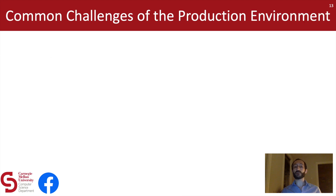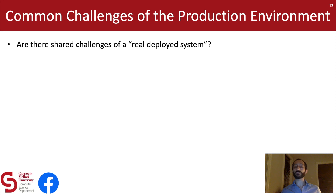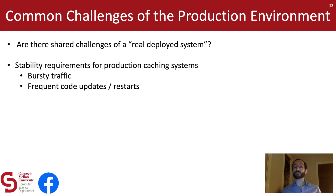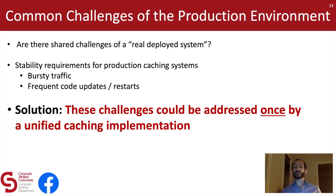The final category of challenges is really a set of challenges related to being a real deployed system in a production environment, and most of these challenges are related to cache stability. For example, caches need to be able to handle bursty traffic — this could be due to diurnal patterns or load balancing events. Similarly, caches need to be able to handle frequent code updates and system restarts. It's common for caches at Facebook to restart once every two weeks for a code update, and most caches would dump the cache contents and then require a lengthy warm-up to achieve acceptable hit ratios. So we need to provide ways to mitigate these effects related to production stability.